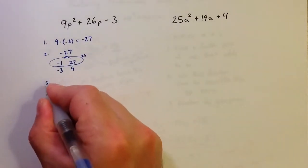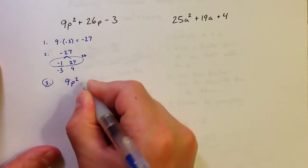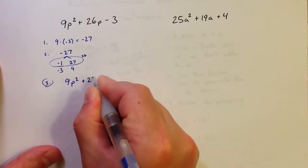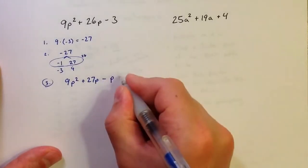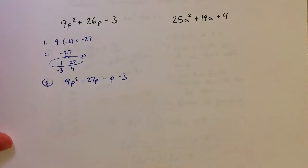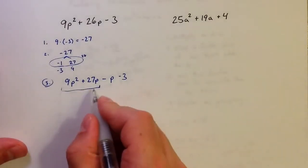So now we're going to rewrite the middle term: 9p squared plus 27p minus p minus 3. Or we could write it the other way with the minus p coming first and the 27p coming second. But either way, when we factor by grouping, we should get the same final answer.